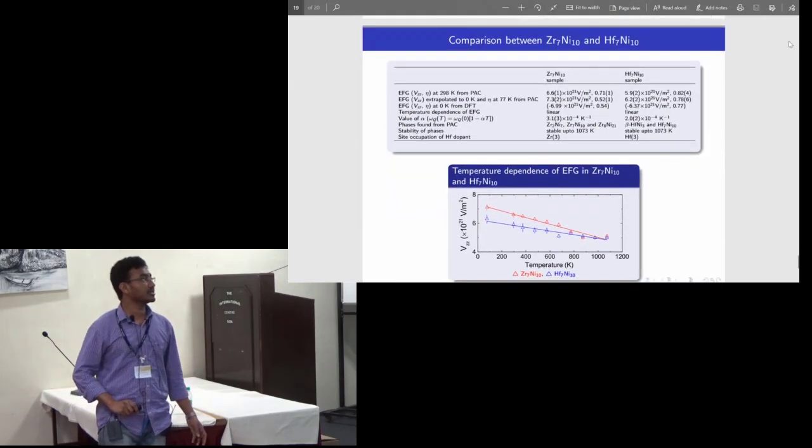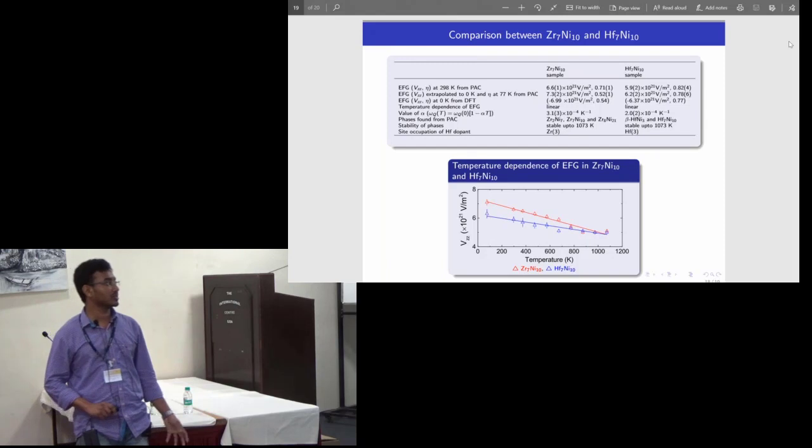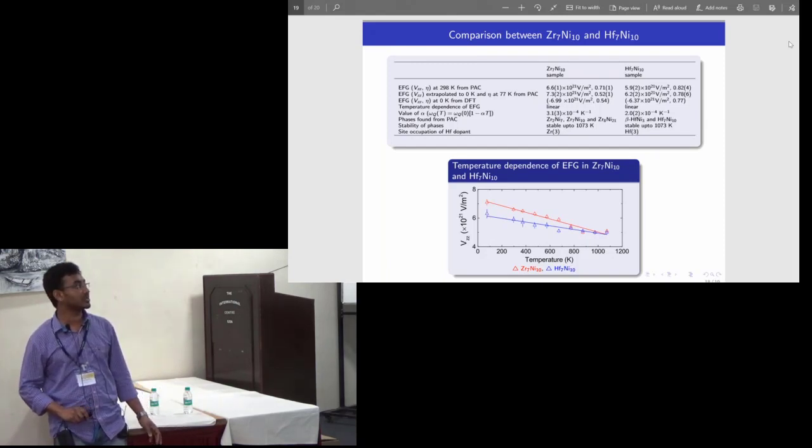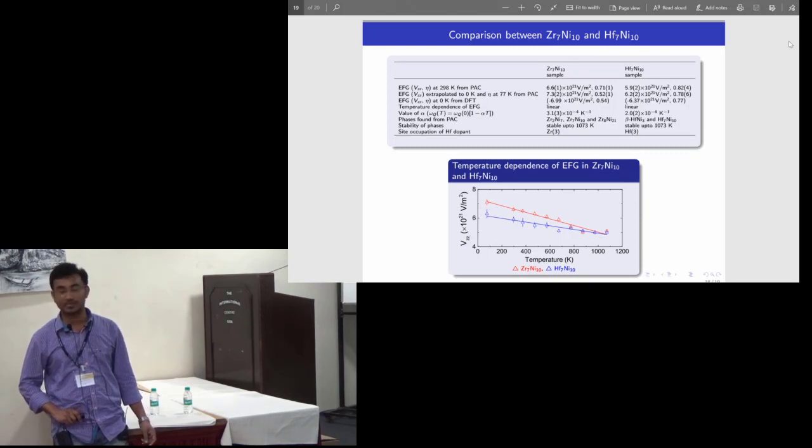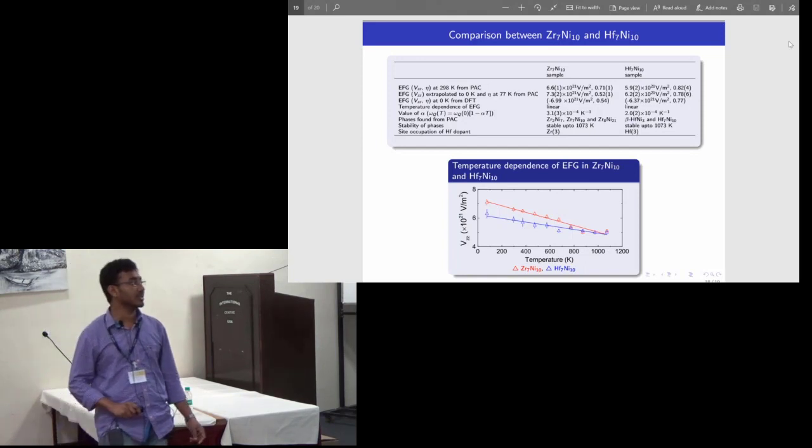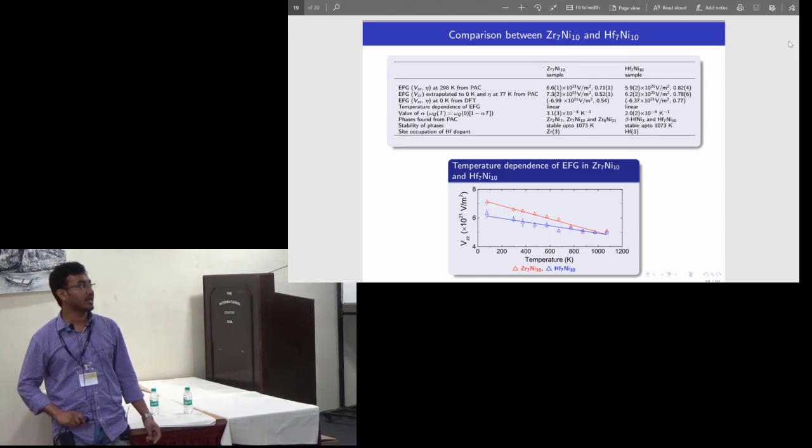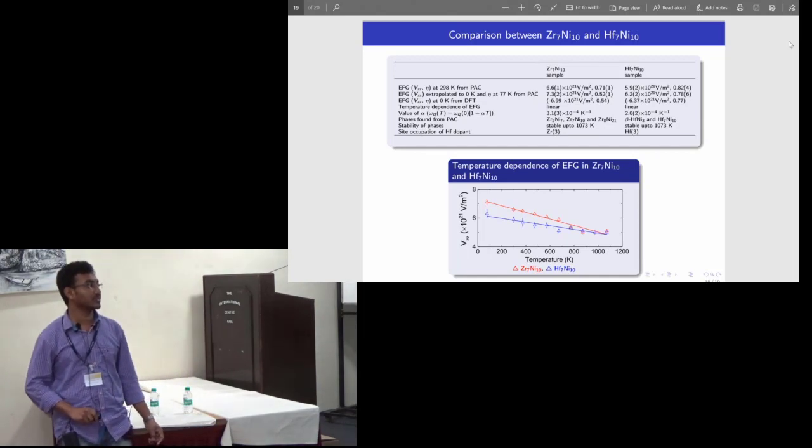I have compared the results obtained in Zr7Ni10 and Hf7Ni10. The electric field gradients in both these samples were found to be quite similar and in both these samples the electric field gradient decreases linearly with temperature. In Zr7Ni10 these Zr2Ni7, Zr7Ni10, and Zr8Ni21 are found, while in Hf7Ni10 beta-HfNi3 and Hf7Ni10 were found. Both these phases were found to be stable up to 1073 K and it was found that the hafnium prefers Zr3 and Hf3 positions in these samples.